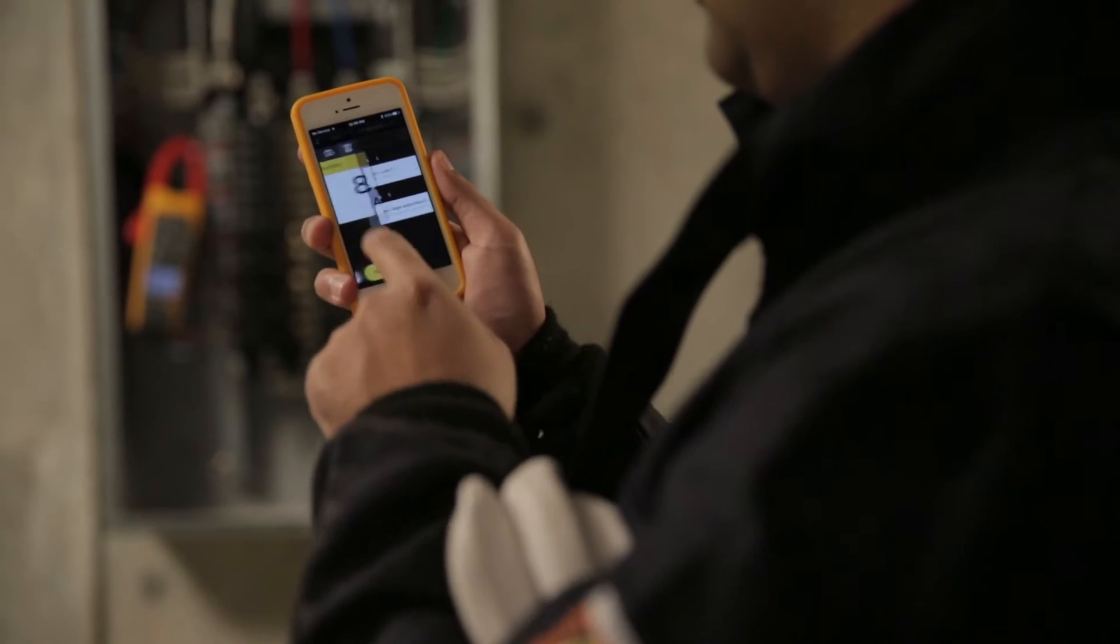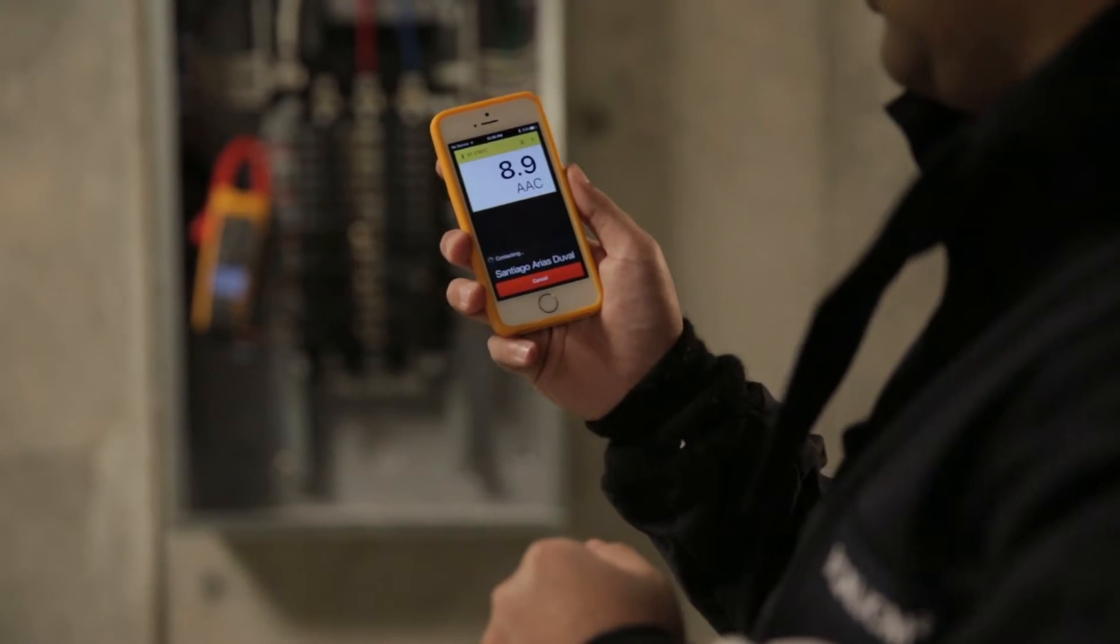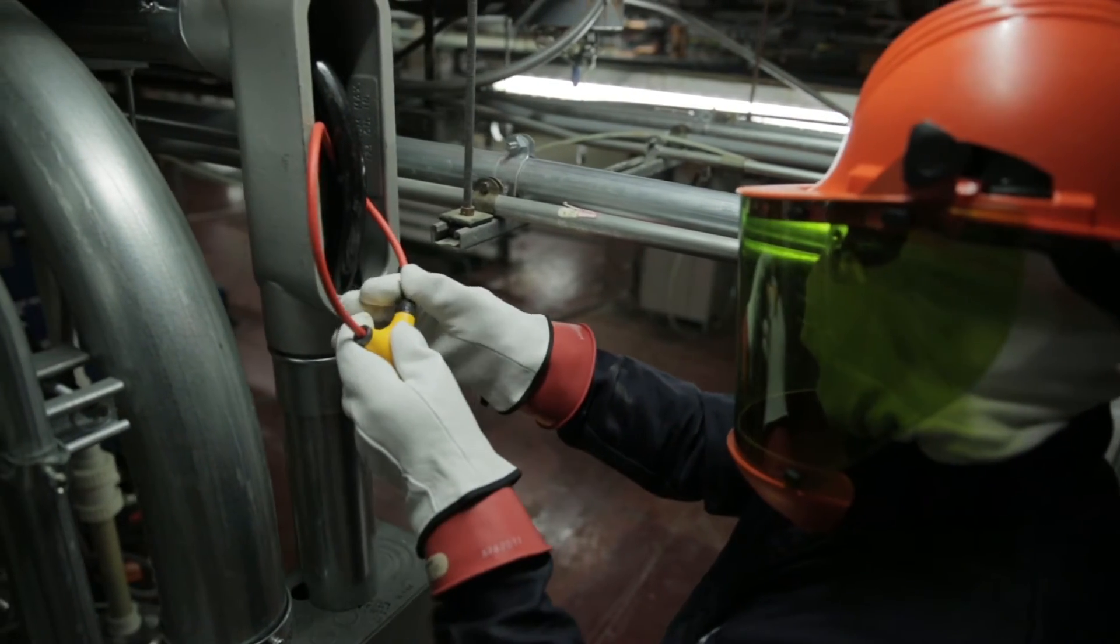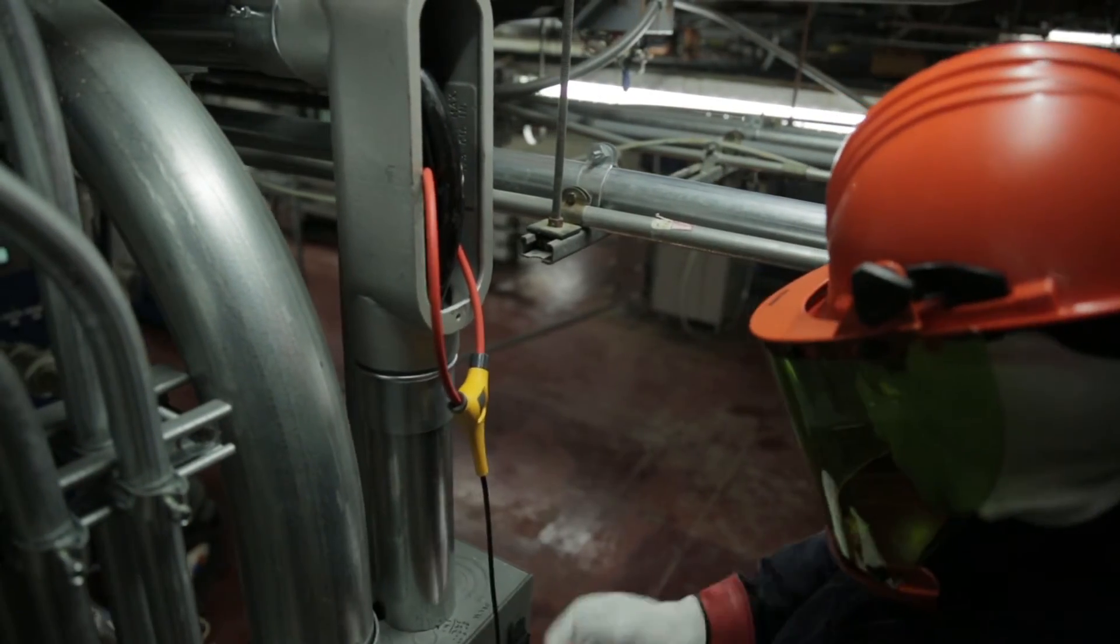The 376 FC True RMS ACDC clamp meter with iFlex lets you access tight places and around large and awkward conductors.